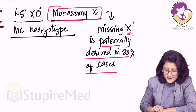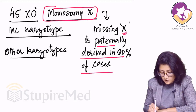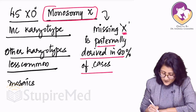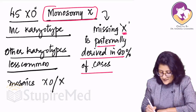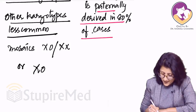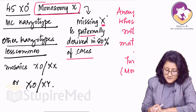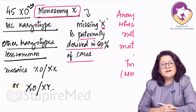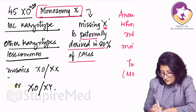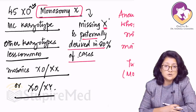Apart from monosomy X — that is 45XO — there can be other karyotypes in Turner syndrome which are less common. These include mosaic forms: some cell lines which are XO and some which are XX, or in a very rare mosaic form, cell lines that are XO and XY. So 45XO is not the only karyotype in Turner syndrome; mosaic forms such as XO/XX also exist.